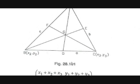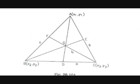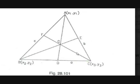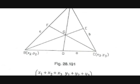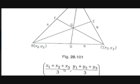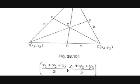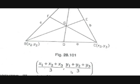First, the coordinates of the centroid of a triangle with vertices (X1, Y1), (X2, Y2), and (X3, Y3) is nothing but ((X1 + X2 + X3) / 3, (Y1 + Y2 + Y3) / 3).